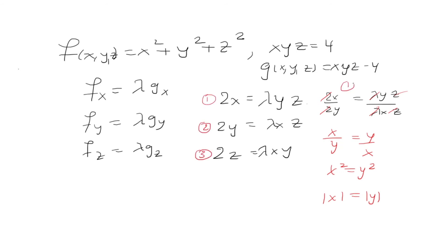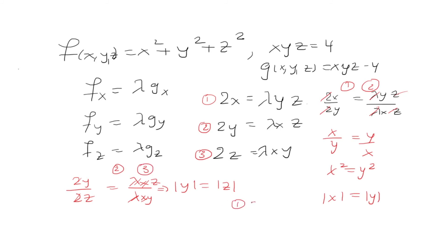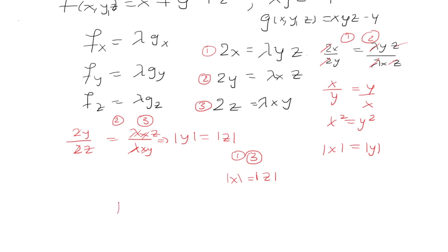Taking equations 2 and 3: 2y/2z = (lambda · xz)/(lambda · xy). The twos, lambdas, and x's cancel, giving y/z = z/y, so |y| = |z|. Doing this one more time with equations 1 and 3 gives |x| = |z|. So all three relationships are satisfied, meaning |x| = |y| = |z|.